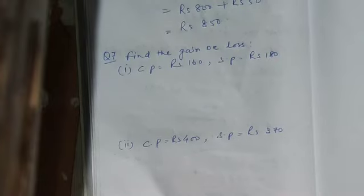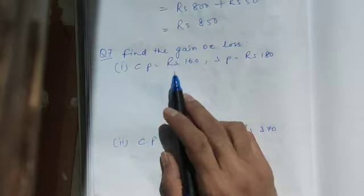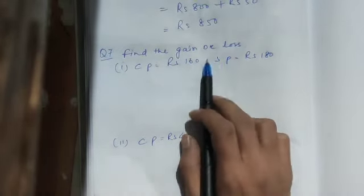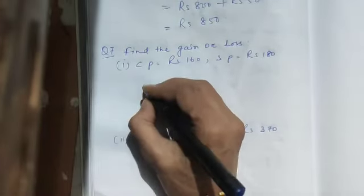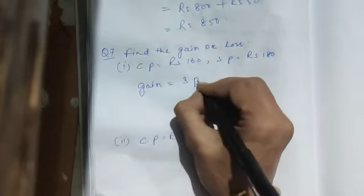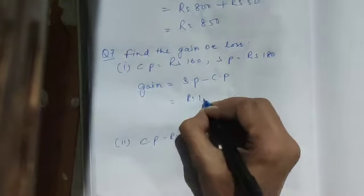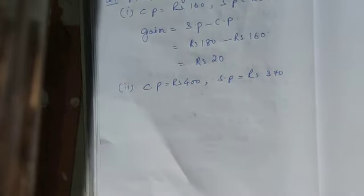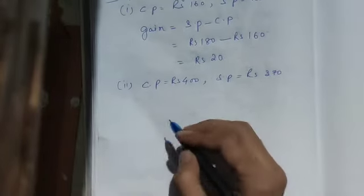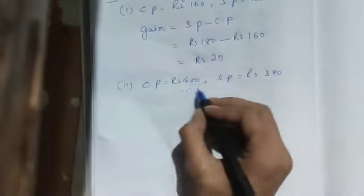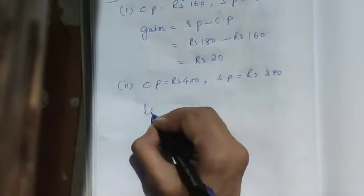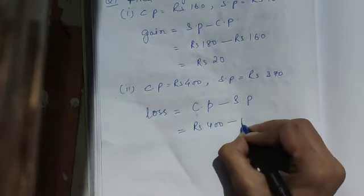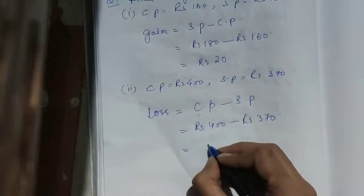Question number 7: find the gain or loss. We check which is greater — CP or SP. Here CP is 160 and SP is 180, so SP is greater, meaning it is a gain. Gain equals SP minus CP: 180 minus 160 is rupees 20. For the second part: CP is 400 and SP is 370, so CP is greater — that means it is a loss. Loss equals CP minus SP: 400 minus 370 is rupees 30.